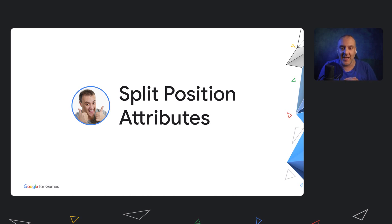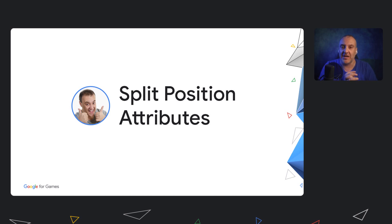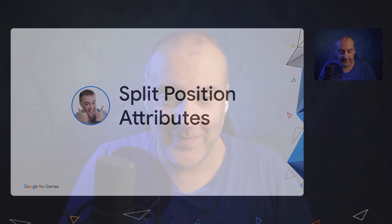In the game we just looked at, we can easily achieve a 70–80% reduction in vertex bandwidth and a massive improvement in the GPU frame rendering time.